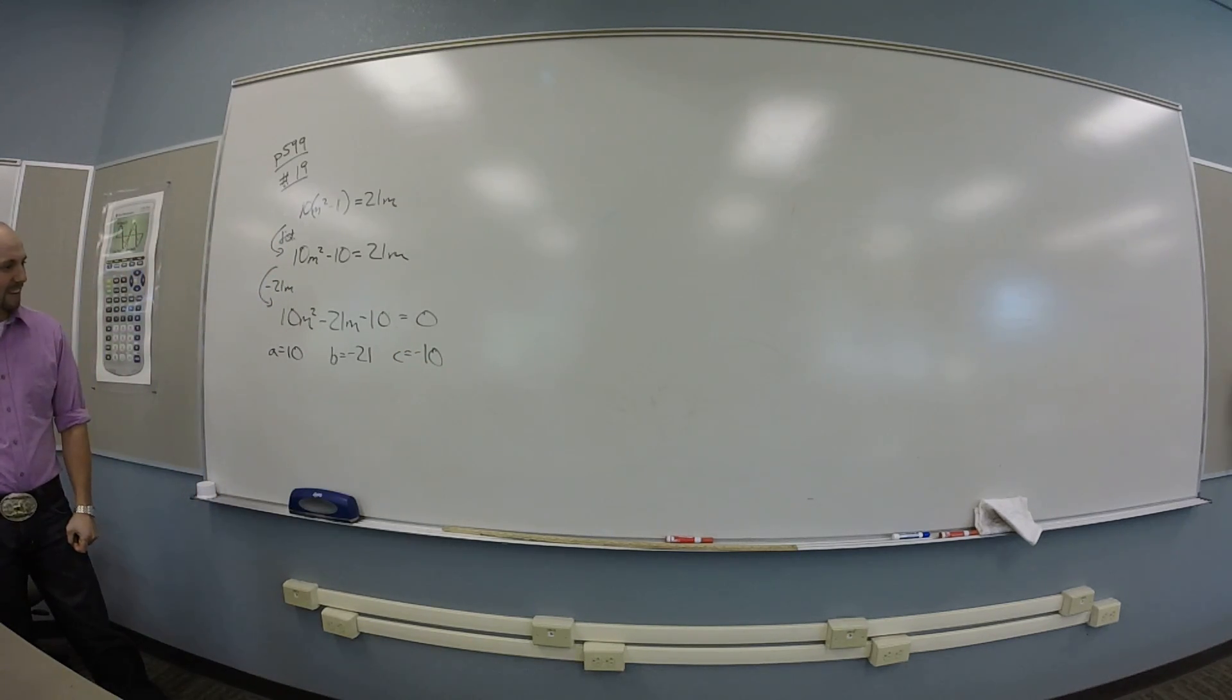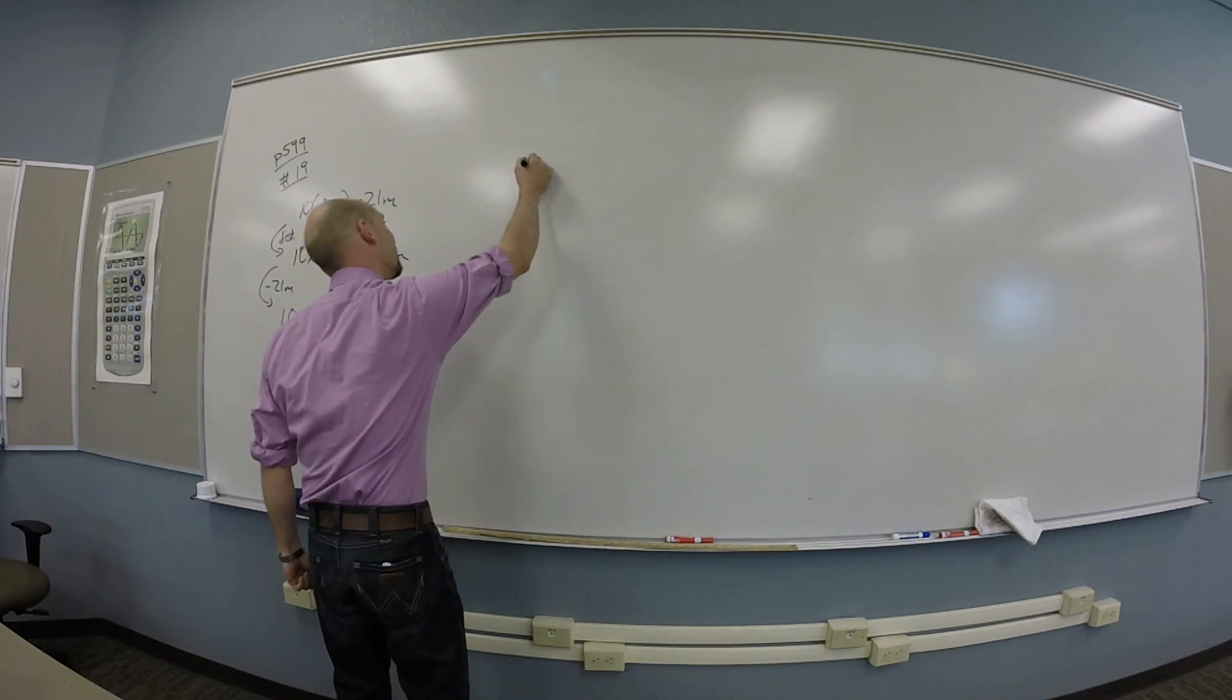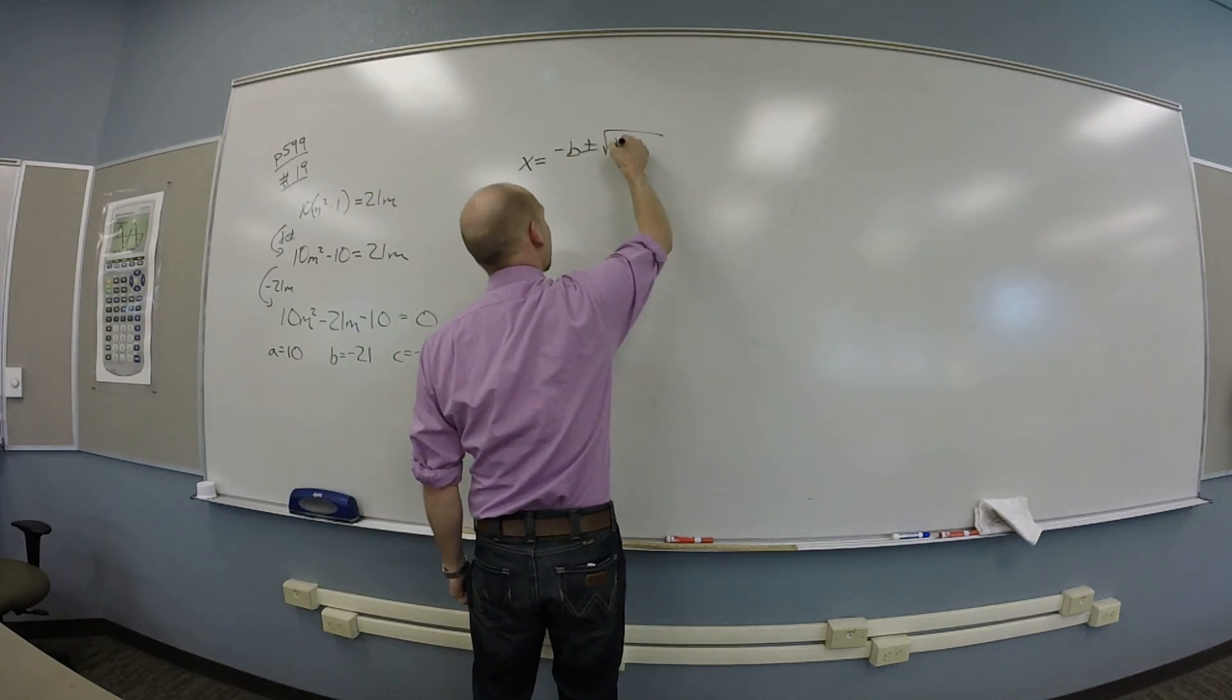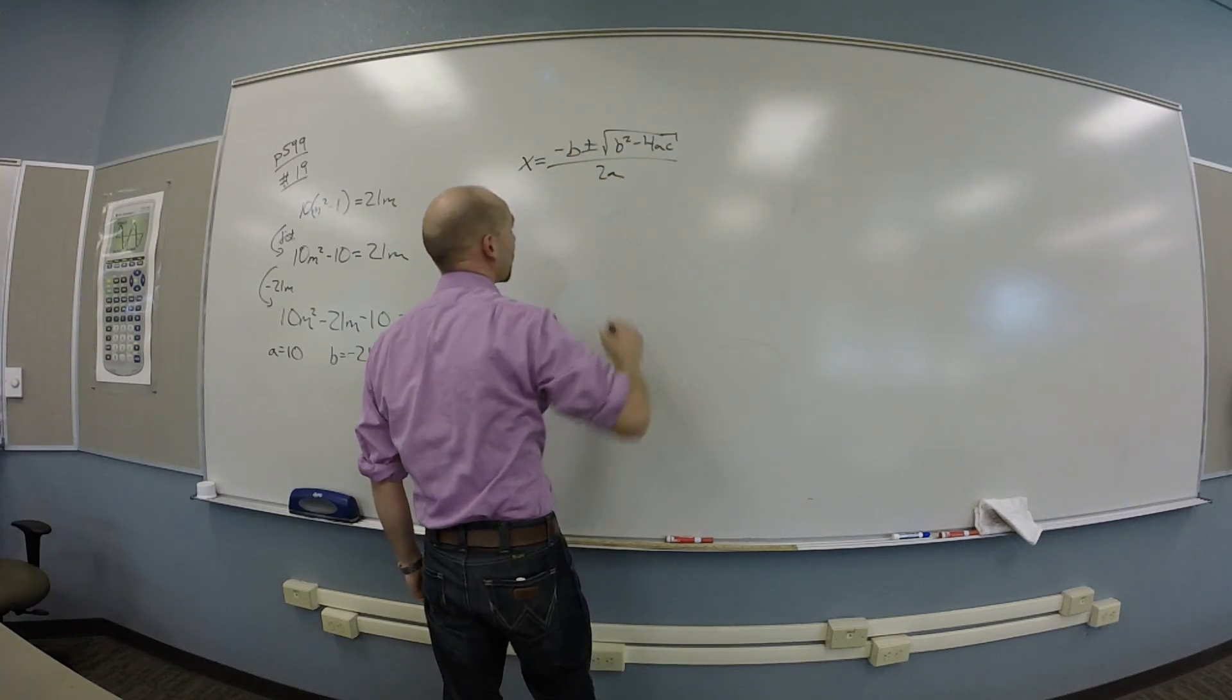There you go. Let's throw that in the quadratic formula. Okay. So I need to remember the quadratic formula. Yes? Negative b plus or minus the square root of b squared minus 4ac over 2a.